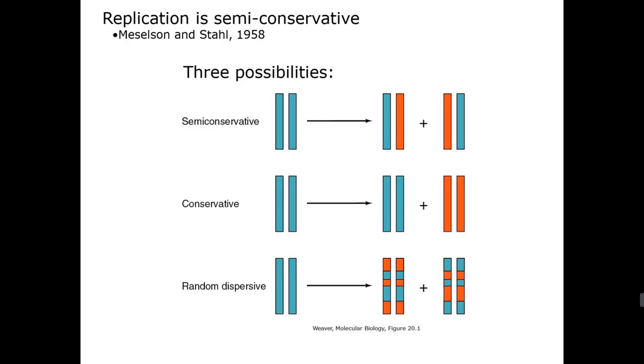The possibilities that they were considering were one semi-conservative model where you start with two parental strands, the parental strands are then separated to serve as templates for the synthesis of the daughter strands, and the result is two hybrid molecules each of which contain a parental strand and a newly synthesized strand.